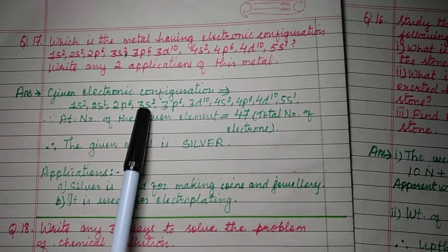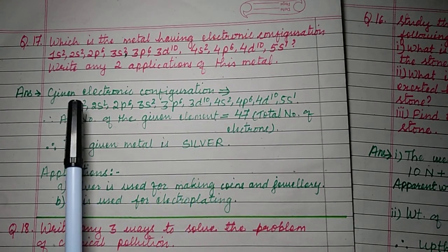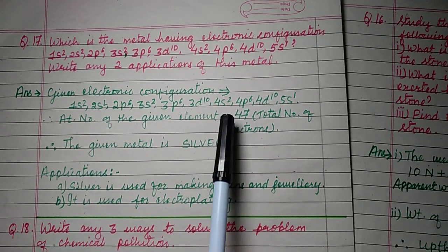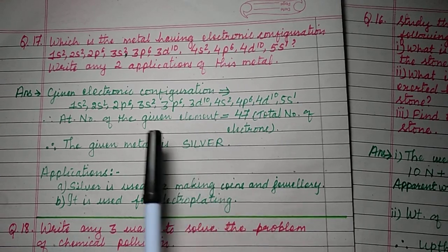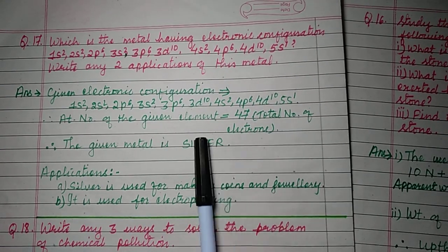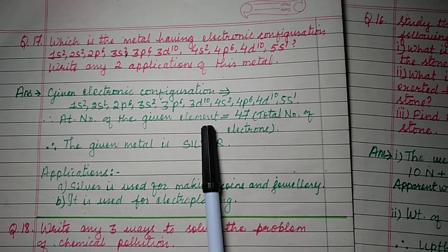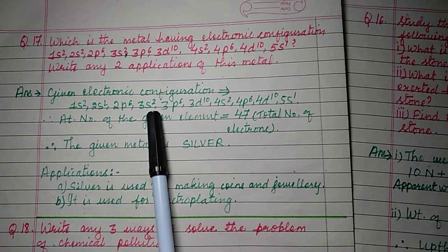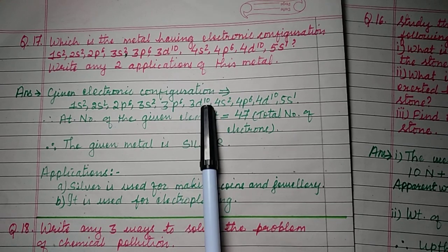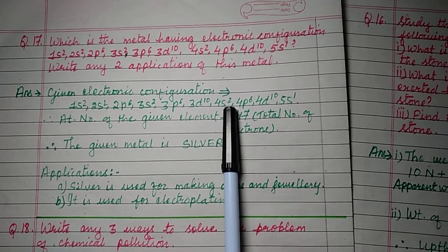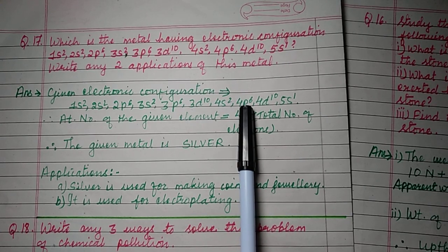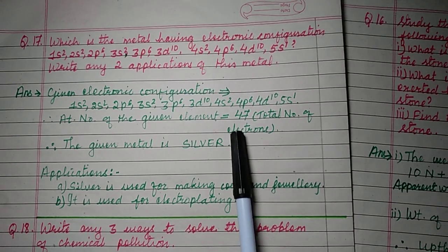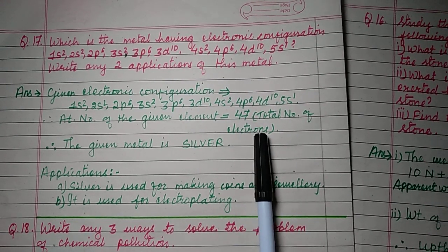The number of electrons is given by the superscript numbers in the configuration — the s, p, d exponents. These numbers are 2, 2, 6, 2, 6, 10, 2, 6, 10, 1. By adding all these you find the atomic number: 2+2=4, +6=10, +2=12, +6=18, +10=28, +2=30, +6=36, +10=46, +1=47. Total electrons = 47.